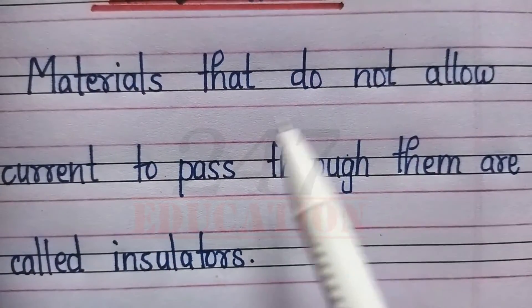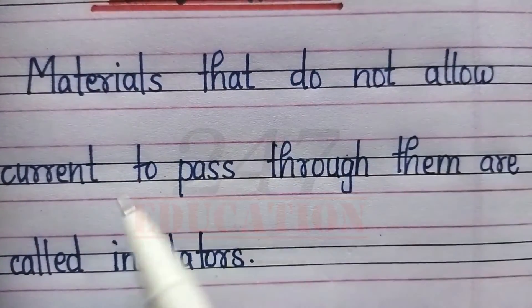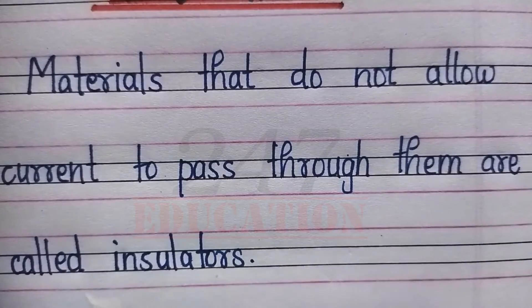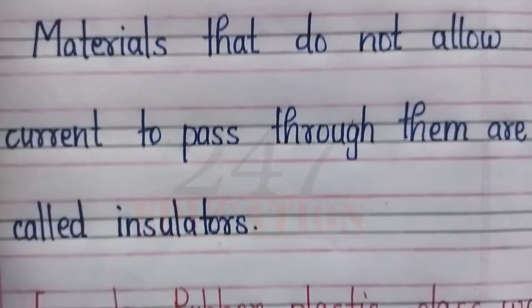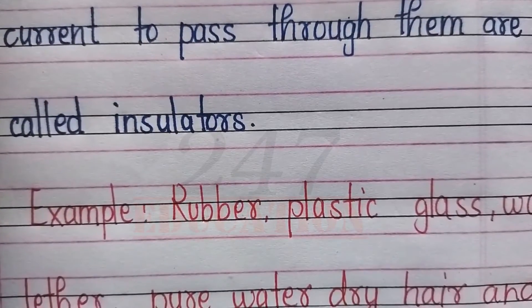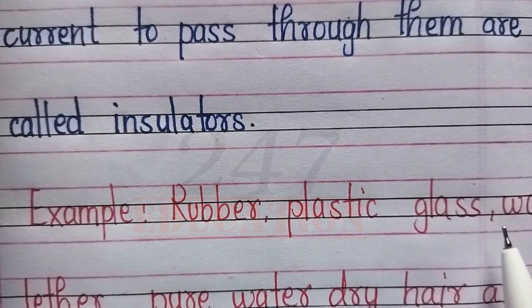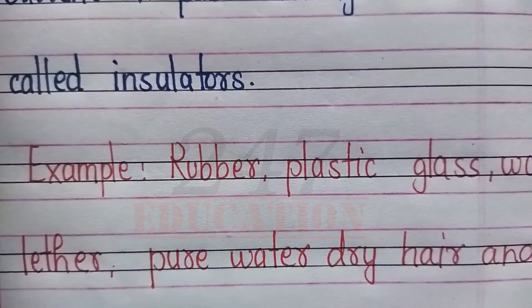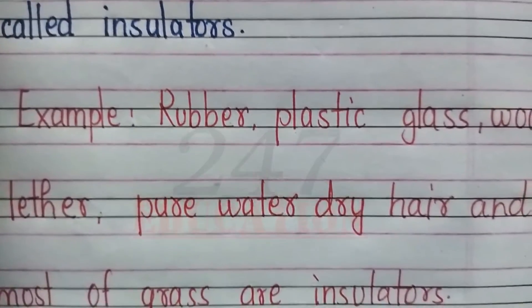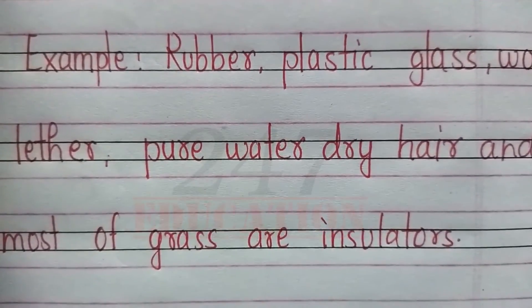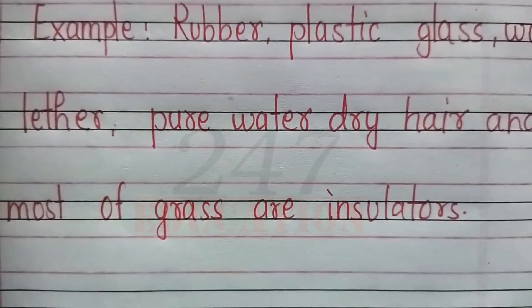Materials that do not allow current to pass through them are called insulators. For example: rubber, plastic, glass, wood, leather, pure water, dry hair — most gases are insulators.